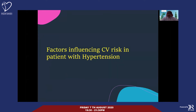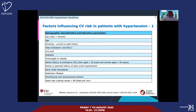What factors influence cardiovascular risk in patients with hypertension? You need to know the patient's age, smoking status, total cholesterol, HDL, uric acid, diabetes, body weight, BMI, family history of cardiovascular disease, family history of hypertension or early-onset hypertension, early menopause for ladies, lifestyle, psychosocial status, socioeconomic factors, and heart rate at rest. Heart rate at rest is really a marker of cardiac activity and overall fitness.